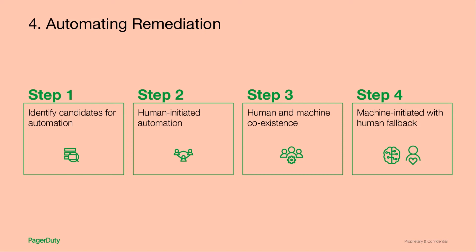You can start by having human-initiated automation. Instead of automatically running the system, you still get a person to know about the problem and give them a push-button way of running the automation — it still saves time and saves them from having to look up a runbook. After a period of that working, maybe you're comfortable automatically kicking it off, but still having a person make sure nothing goes wrong. And then, once you're comfortable, you graduate to just kicking it off — and only getting a person involved if it doesn't actually resolve the issue.